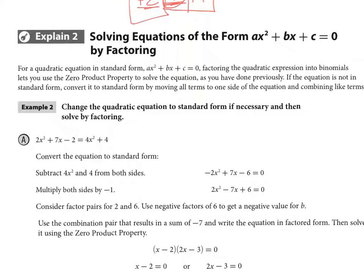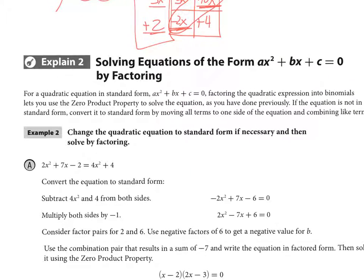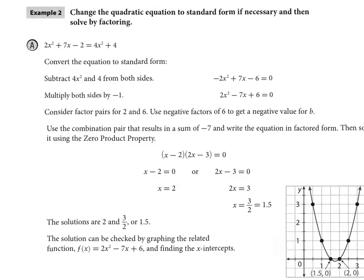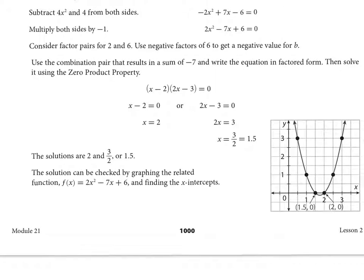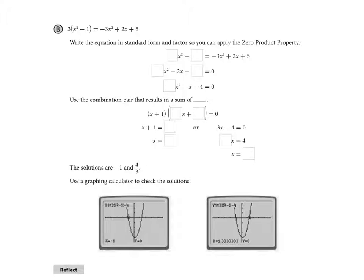When it's set up as an equation, you're still factoring, setting equal to zero, and finding your solutions — and you can still use a calculator. Sometimes the calculator gives decimal answers; in factored form you'll get a fraction. I'll show that in this example.